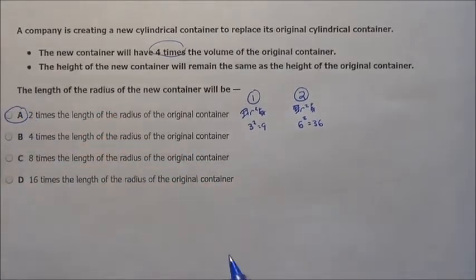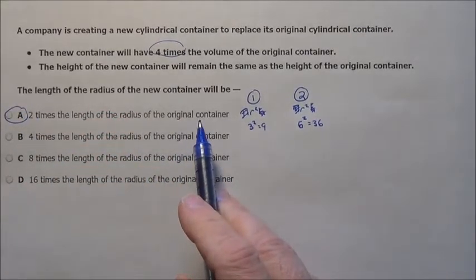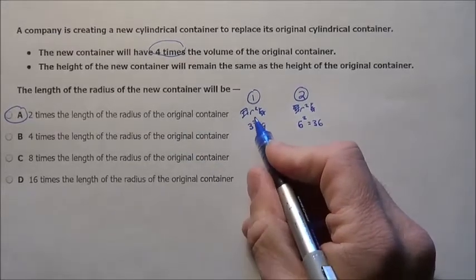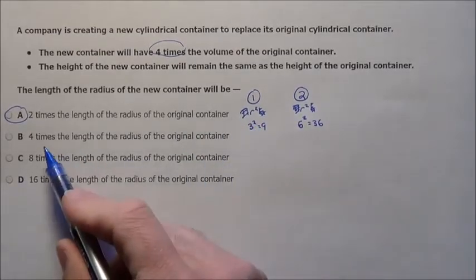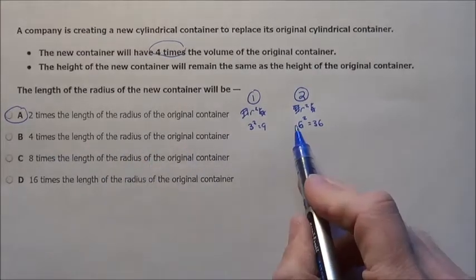The option is going to be choice A, 2 times the length of the radius. Now again, let's go back to this and let's imagine the radius was 3 again and we squared it. If you try to make the length of the radius 4 times as much, instead of 6,